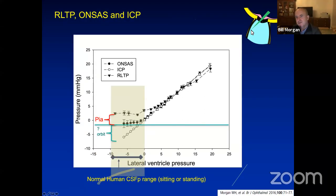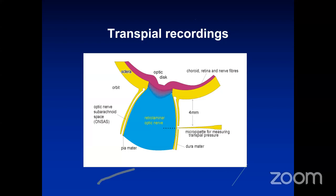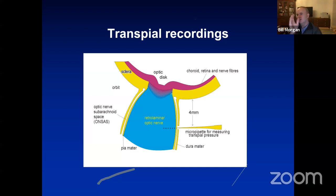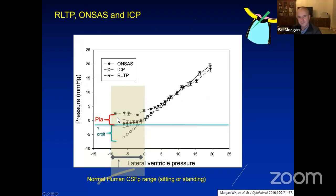The retrolaminar tissue pressure isn't always equal to the optic nerve subarachnoid space pressure—it does follow, but only until you reach about 4 or 5 millimetres of mercury, at which point it doesn't change much. So there's another buffer. We found that was due to the pia mater, which acts a bit like a sausage skin compressing the retrolaminar nerve to some degree, giving an extra buffer to prevent very low pressure in this part of the nerve. So you have two buffering capacities: the orbit and the pia mater.